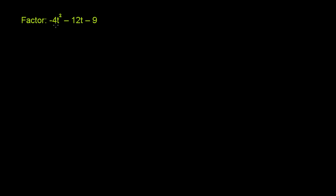We need to factor -4t² - 12t - 9. A good place to start is to say, are there any common factors for all of these terms? When you look at them, the first two are divisible by 4, these last two are divisible by 3, but not all of them are divisible by any one number.